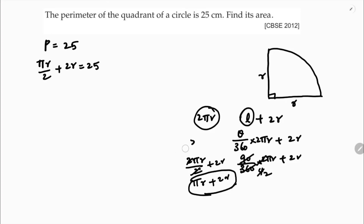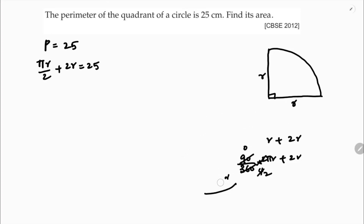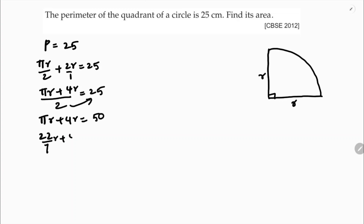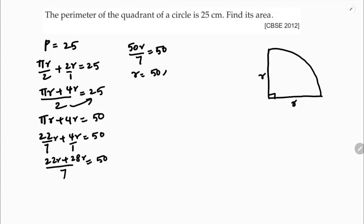Since the quadrant perimeter is 25, we have πr/2 + 2r = 25. Taking LCM of 2: (πr + 4r)/2 = 25, so πr + 4r = 50. Substituting π = 22/7: (22r/7) + 4r = 50. Taking LCM of 7: (22r + 28r)/7 = 50, so 50r/7 = 50, giving r = 7 centimeters.